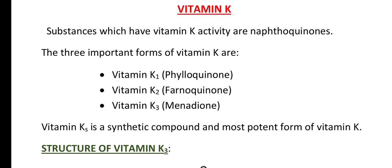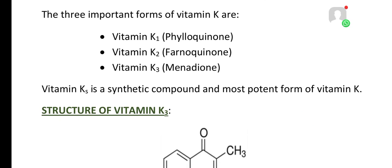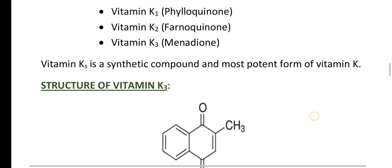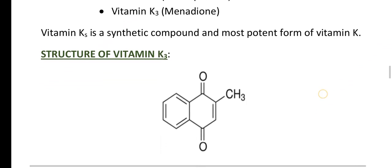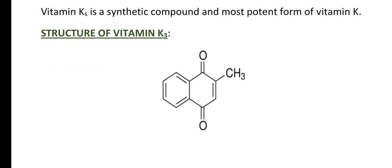Now coming to vitamin K. Substances which have vitamin K activity are naphthoquinones. There are three important forms of vitamin K: vitamin K1, also called phylloquinone; vitamin K2; and vitamin K3, also known as menadione. Among these three forms, vitamin K3 is a synthetic compound and it is the most potent form of vitamin K. The structure of vitamin K3 is provided.